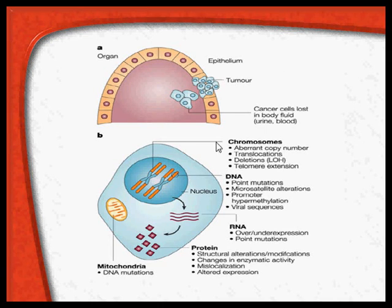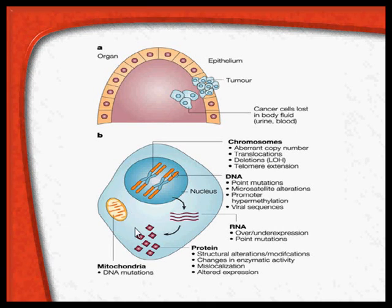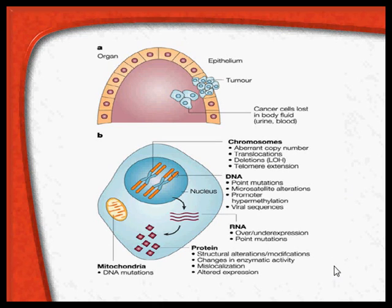These tumor cells, like any other cells, contain the nucleus, the chromosomes inside, the DNA in the chromosomes, then the RNA through which protein synthesis occurs, and the mitochondria. So there could be abnormalities in any one of these areas related to the tumor cells — either in the chromosomes, the DNA, the RNA, the proteins that are synthesized, or the mitochondria.